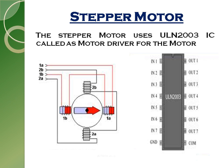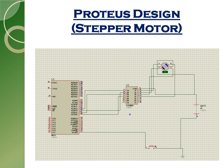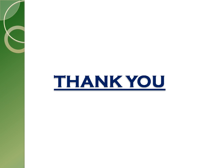The stepper motor has four poles: 1A, 1B, 2A, and 2B. For programming the stepper motor, we send a high logic step by step on each pole. It also uses a motor driver IC called ULN2003 to increase the current and voltage specifications of the controller. This is the Proteus design of the stepper motor, which also shows the angle at which the stepper motor is currently rotating.